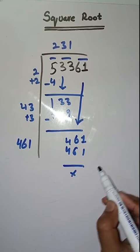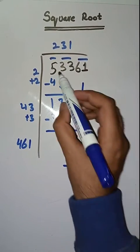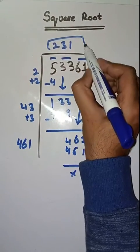So this is completely solved. Square root of 53,361 is 231.